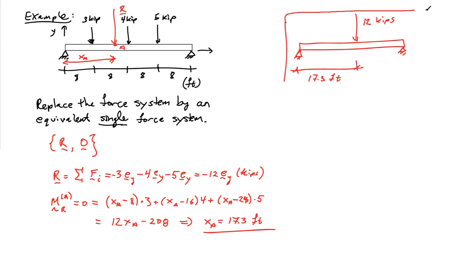So this force system over here is equivalent to my original force system that was composed of three separate forces located at 8, 16, and 24 feet. And these two force systems have the exact same effect on the beam as a rigid body.